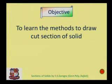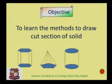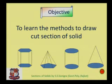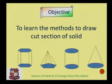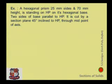The objective of today's discussion is to learn methods to draw cut sections of solids. We will cover four solids: prism, pyramid, cylinder, and cone — how to draw the top view, front view, and if cut at a certain angle, what would the front view and top view look like, and what would be the true shape. These various methods we will discuss in this session.